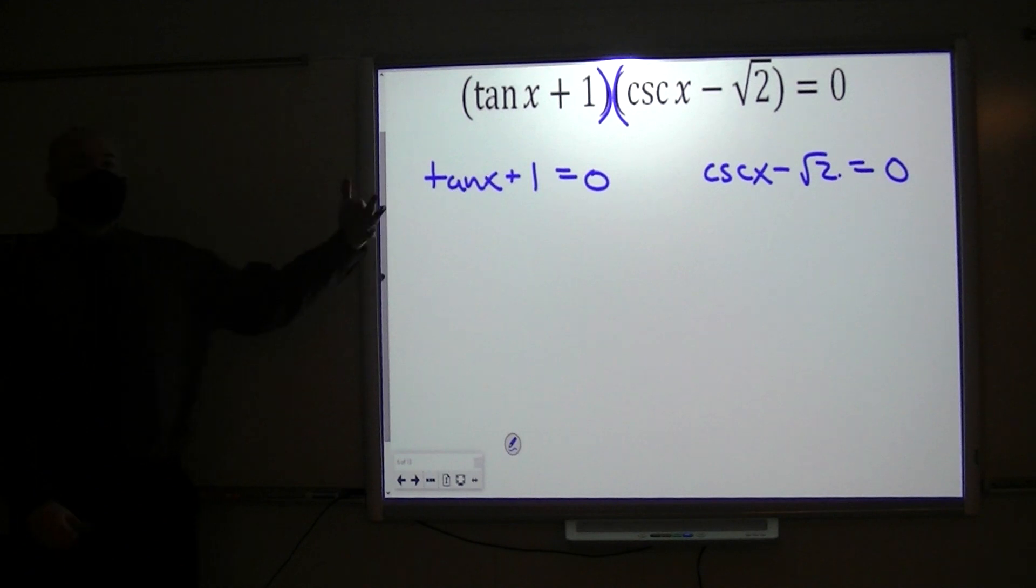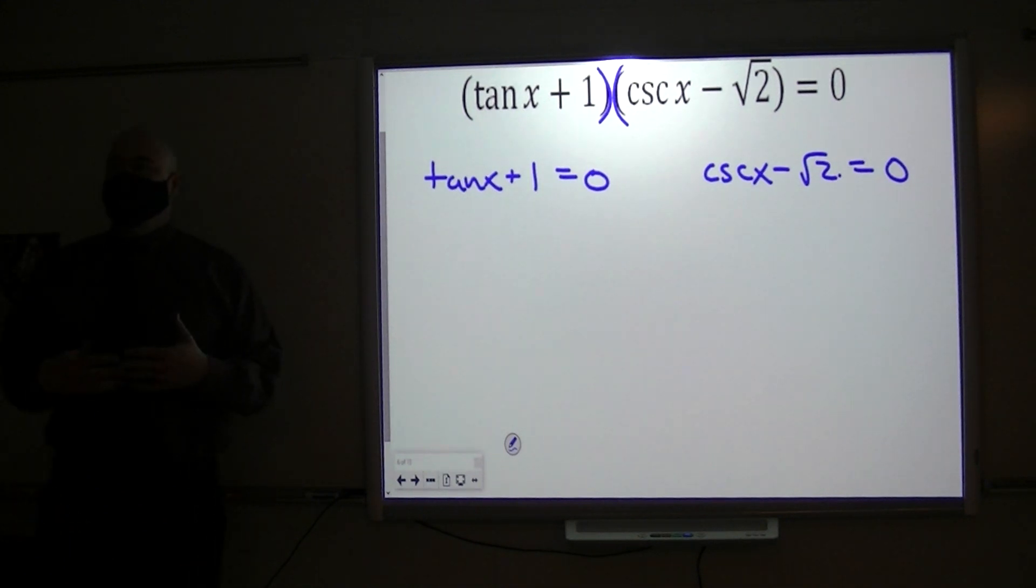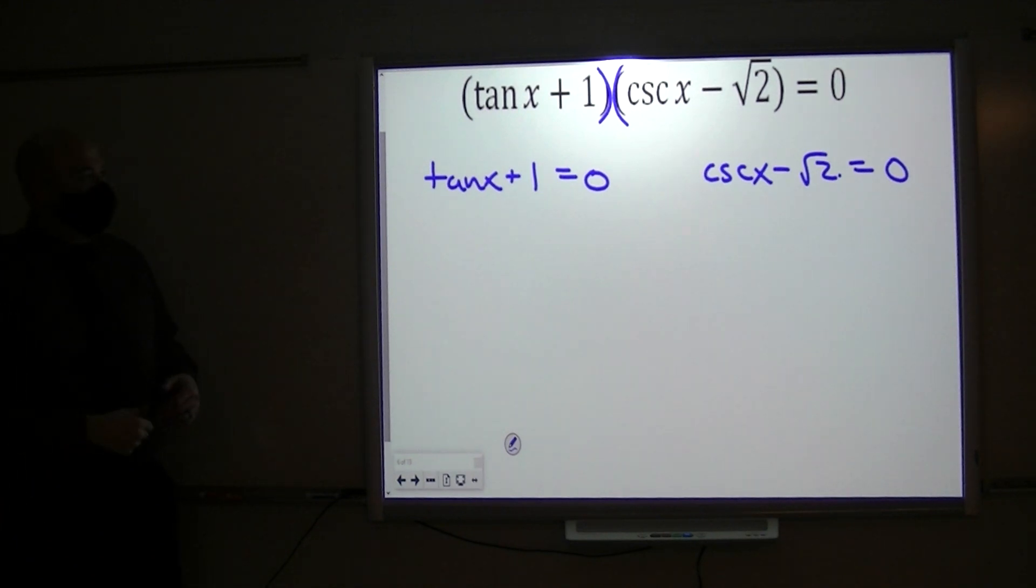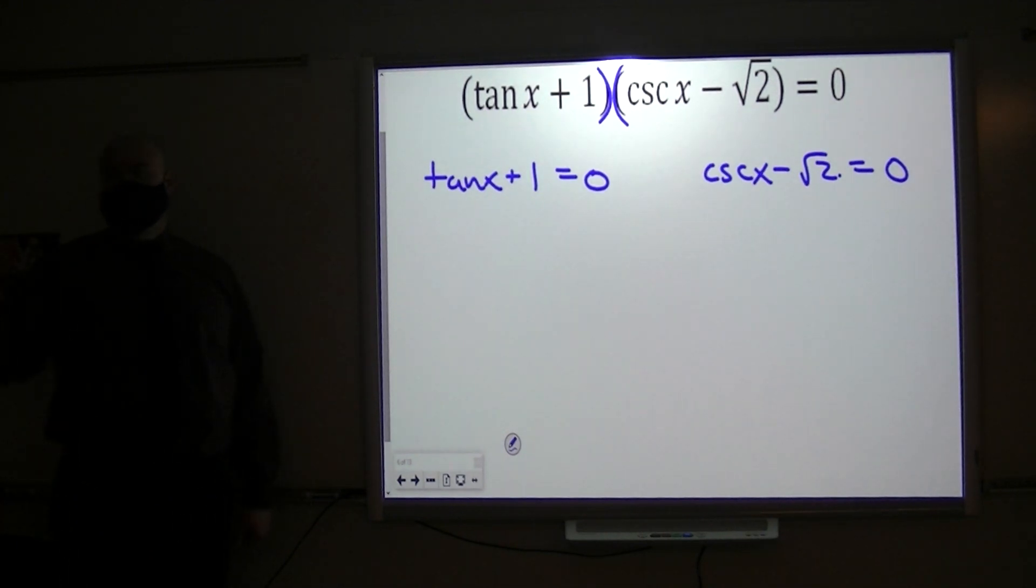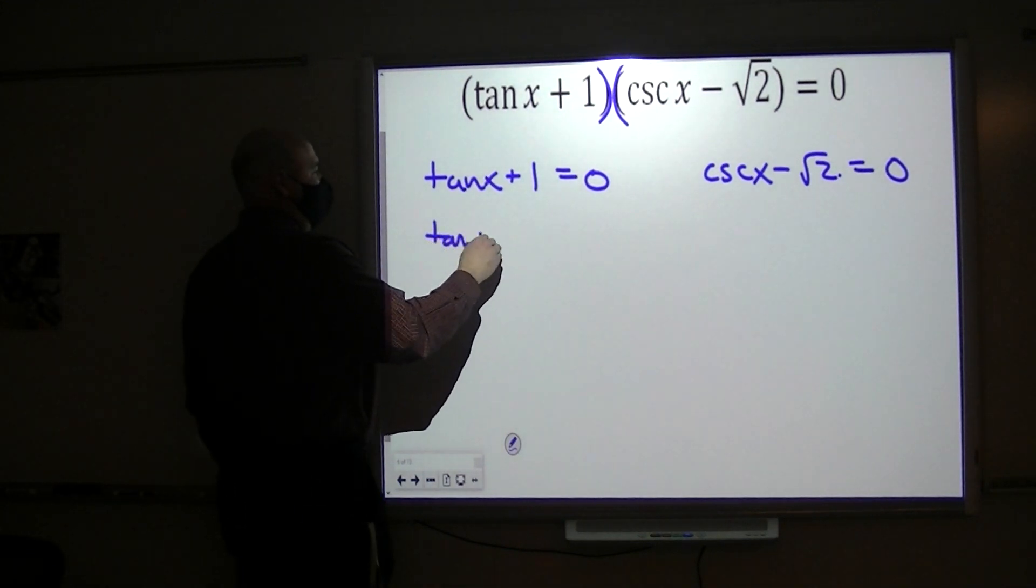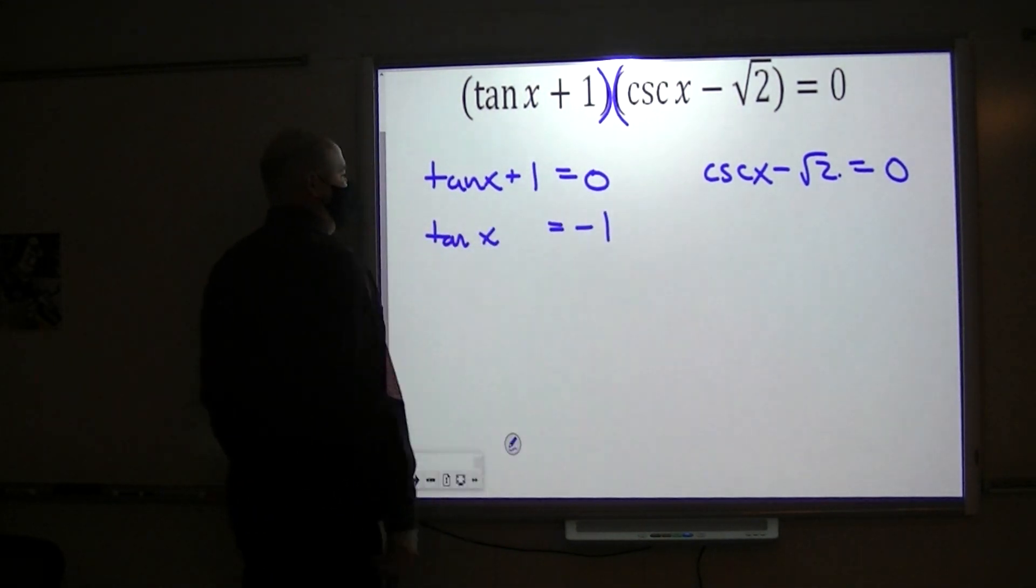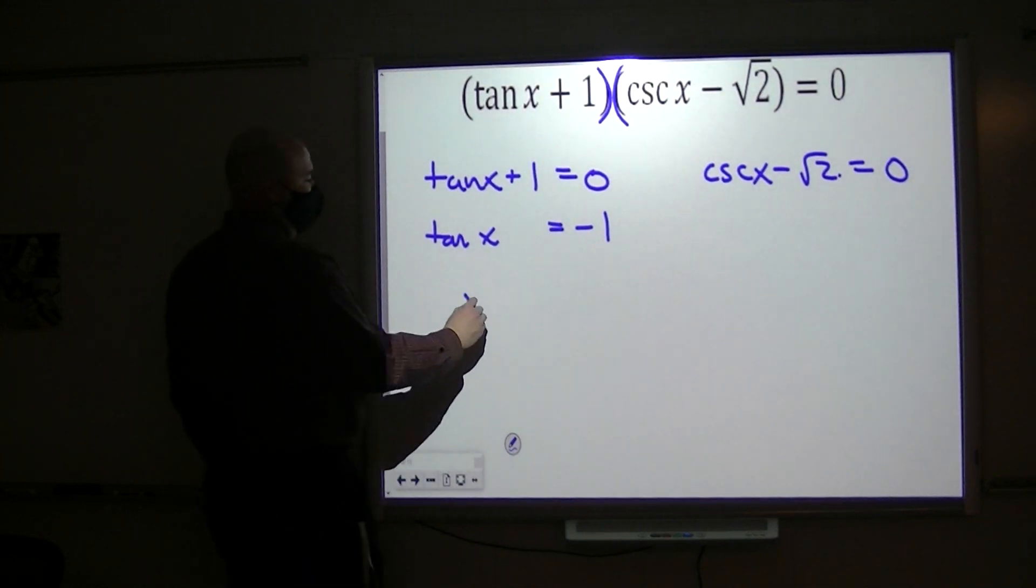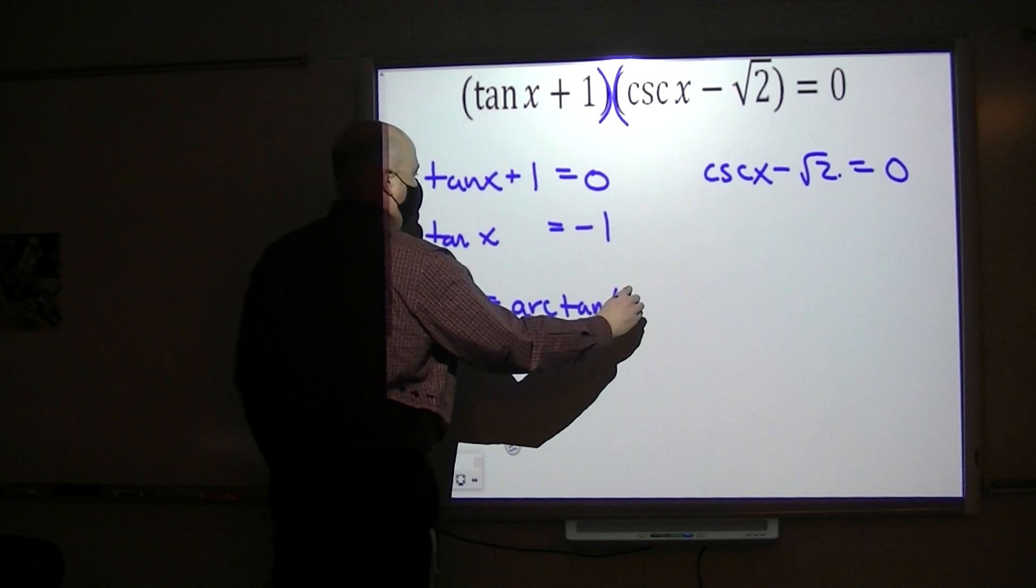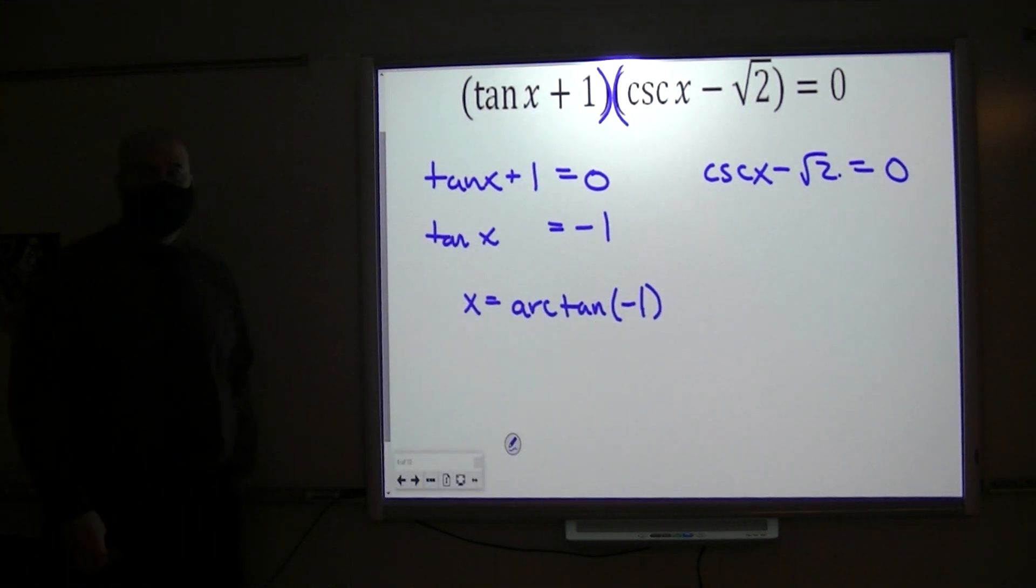Now each one of these equations fits the mold of starting from the beginning. Write everything in terms of tangent, cosine, or tangent. Isolate the trigonometric terms, so the first thing that we're going to do is subtract one over to this side. Then we're going to take the arc tangent of both sides, so we're taking the arc tangent of negative one.